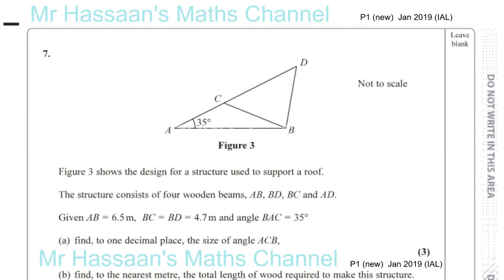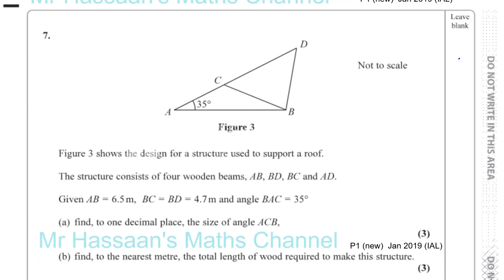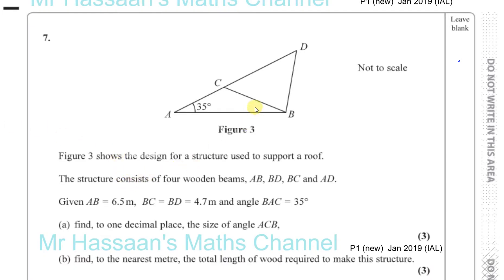Question number seven from the new P1 Edexcel paper, the International A Level version, January 2019. Figure 3 shows a design for a structure used to support a roof. The structure consists of four wooden beams: AB, BD, BC, and AD. Given that AB equals 6.5, BC and BD are both 4.7, and angle BAC is 35 degrees, find to one decimal place the size of angle ACB.